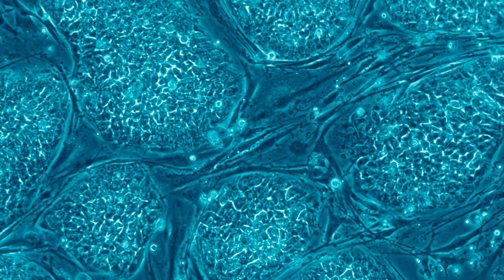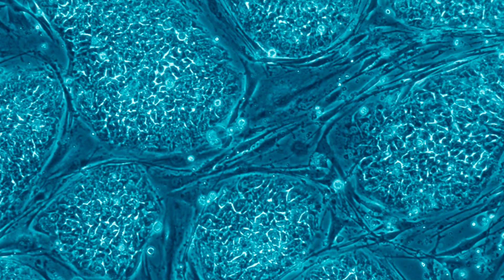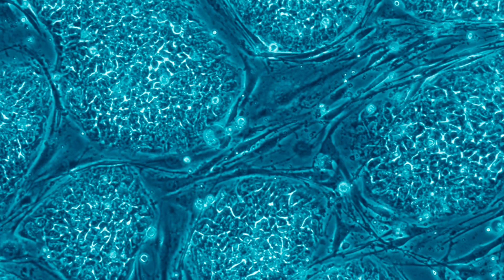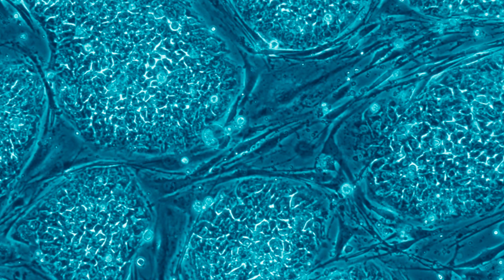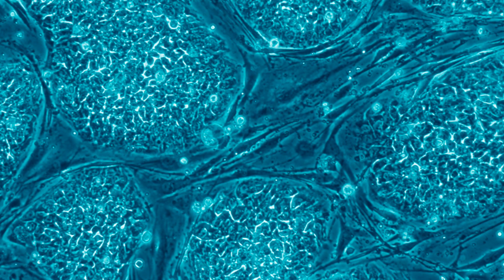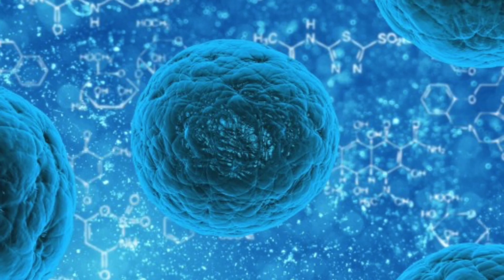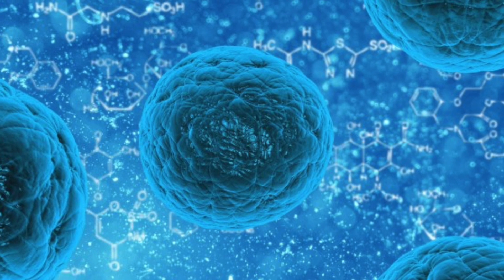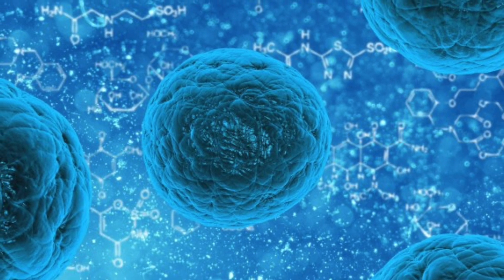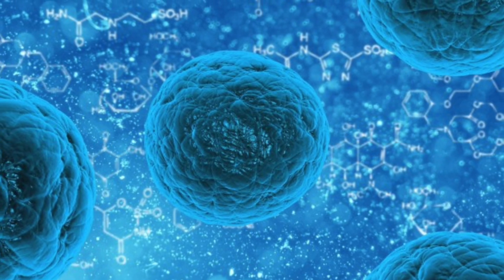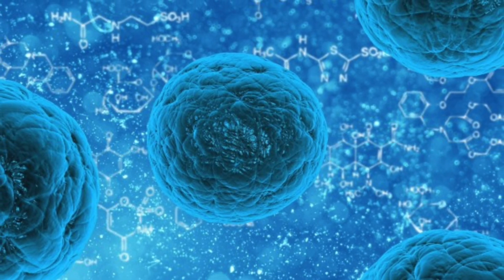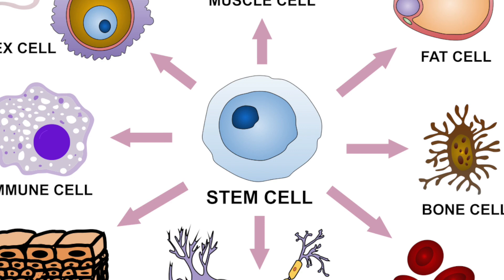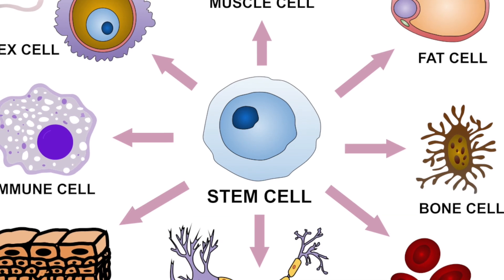In this video we are looking at stem cells. First of all we need to look at the function of stem cells. Stem cells are undifferentiated cells — we looked at differentiation in the last video on mitosis and differentiation — which can develop into any type of cell after instructions.